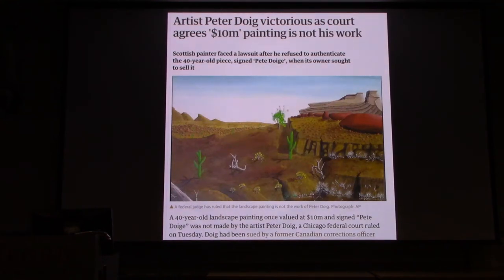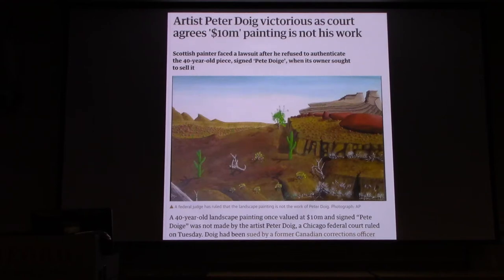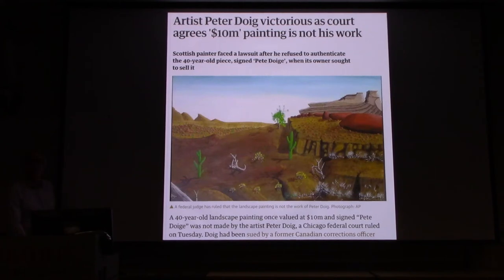Here's another very weird case which was just recently. Peter Doig is a Canadian painter, and a Canadian corrections officer — someone who worked in a prison — had a painting he claimed was by Peter Doig and that he had bought for $100. If it was by Peter Doig, it would be worth maybe $10 million. He needed to get the real artist's approval, but the artist said, 'I didn't make it.' So the corrections officer took him to court — he went to the artist and said, 'Prove you didn't paint this painting.' The artist finally did prove it, and was under legal pressure, forced by the court, to prove that he didn't paint a painting attributed to him.